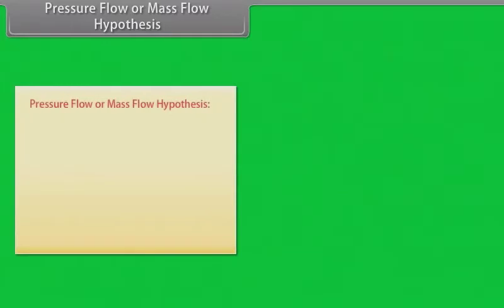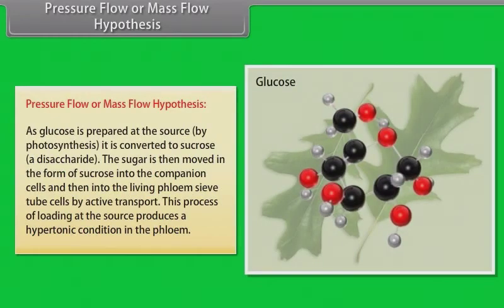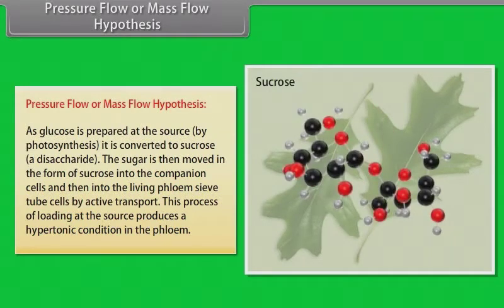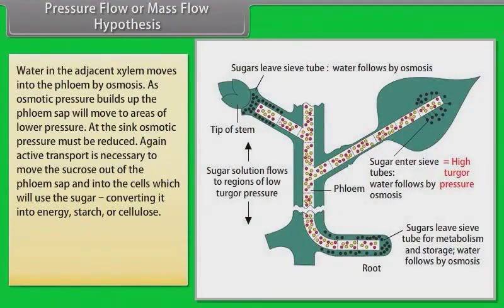Pressure flow or mass flow hypothesis. Pressure flow or mass flow hypothesis is the accepted mechanism used for the translocation of sugars from source to sink. Glucose is prepared at the source by photosynthesis and is converted to sucrose. The sugar is then moved in the form of sucrose into the companion cells and then into the living phloem sieve tube cells by active transport. This process of loading at the source produces a hypertonic condition in the phloem.